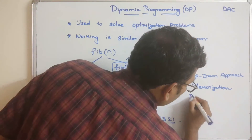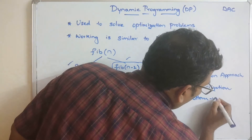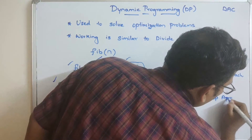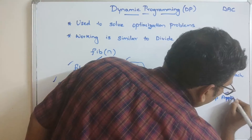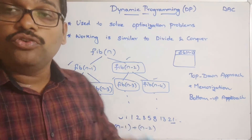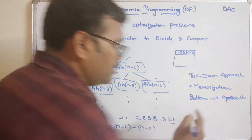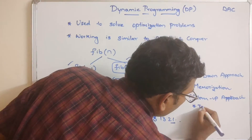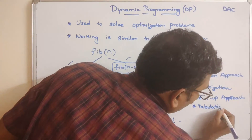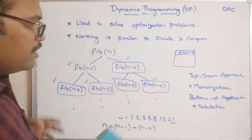The bottom-up approach means the solution is built starting from the base case itself. This process is called tabulation.